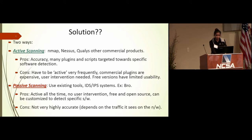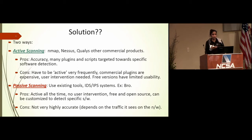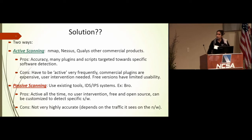There are two methods to build an inventory of unconstrained devices: active scanning and passive scanning. Active scanning is intrusive — you continuously scan your network, such as a /24 or /16, to know what devices are present and guess what software is running. Tools like Nmap and Nessus have plugins and scripts you can run to detect operating systems, giving results like '80% sure it's Windows' or '70% sure it's Linux.'